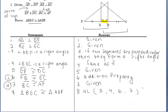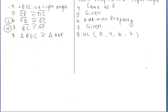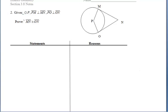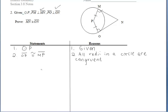Moving on to example two. We have a circle that we're working with — given circle P and some perpendicular segments. In the end, we want to prove that segment MN is congruent to segment ON. We'll likely have to prove some triangles congruent and then use CPCTC. From the circle we get congruent radii, and from the perpendicular segments we get right angles, so we need to mark our diagram with tick marks. Since circle P is the first given, we can write that segment OP is congruent to segment MP because all radii in a circle are congruent.